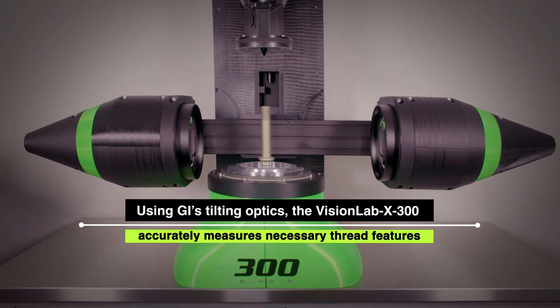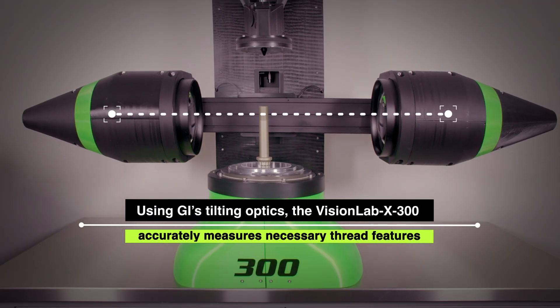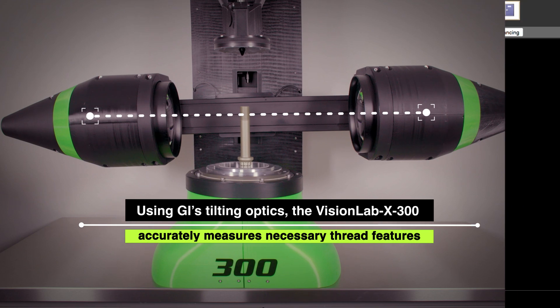Using GI's tilting optics, the VisionLab X300 accurately measures necessary thread features.